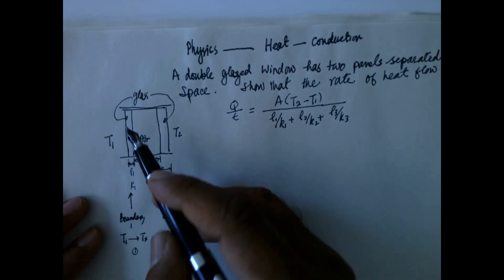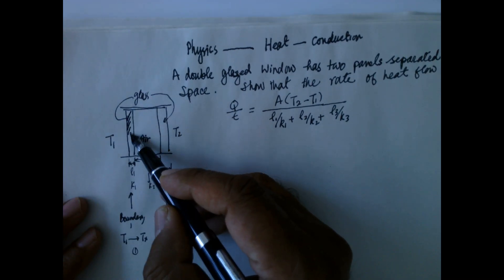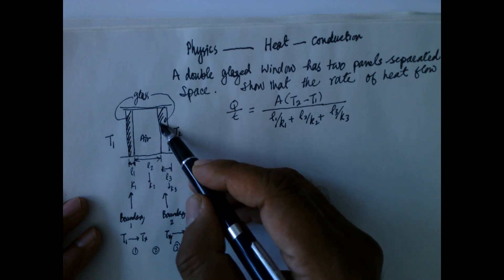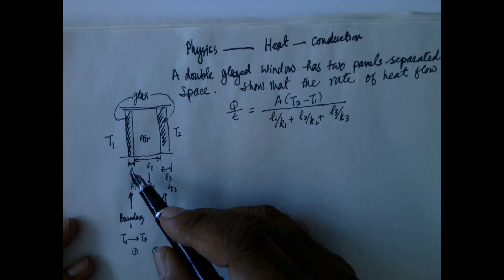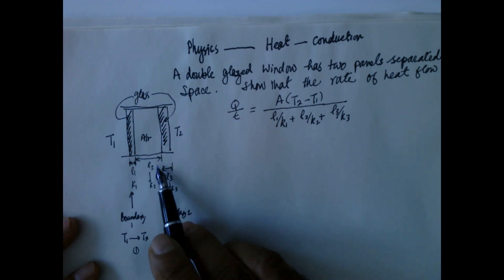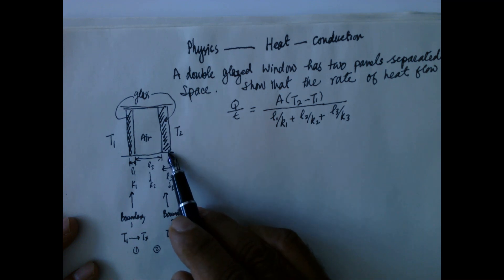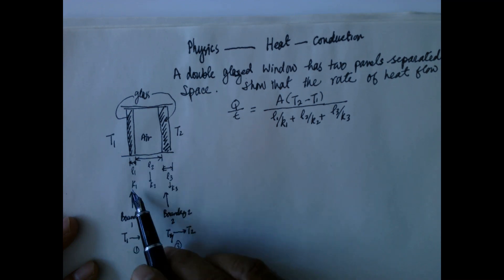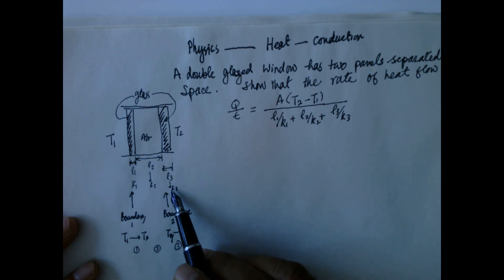So this is the double-glazed setup. This is a glass window, and this is another glass window. This first panel has a length of L1, and the air space is L2. Then the second glass has length L3. The conductivity of the first glass is K1, air is K2, and the second glass is K3.